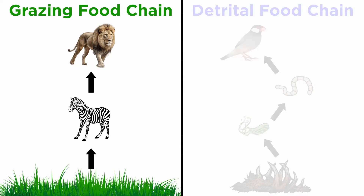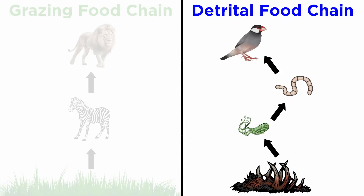In a grazing food chain, energy and nutrients move from plants to the herbivores consuming them, and then to the carnivores or omnivores preying upon the herbivores. In a detrital food chain, dead organic matter of plants and animals is broken down by decomposers, such as bacteria and fungi, then moving to detritivores and then carnivores.